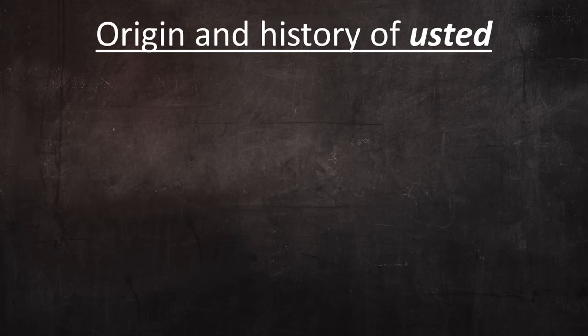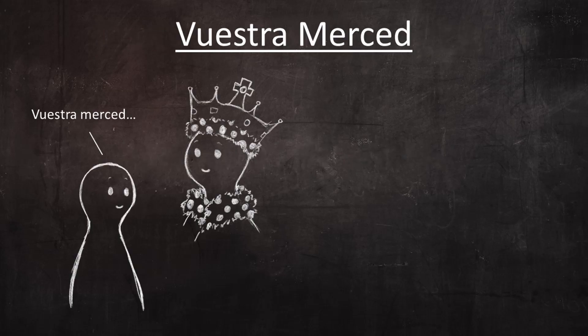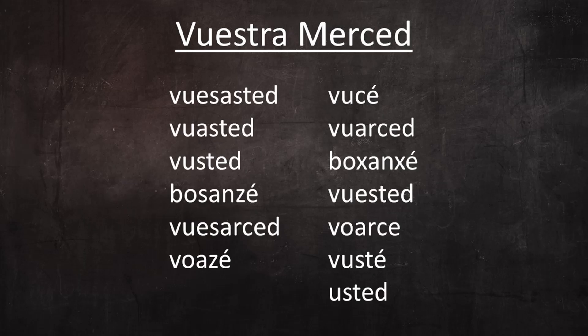I think it's very helpful in understanding Spanish second-person pronouns to know something about their history. In medieval Spanish, the title vuestra merced — the equivalent of the English title 'your grace' — was used to address royalty. Over time, the phrase was used to address more and more people, until eventually it came to be used when speaking to anyone who is higher than you on the social ladder. As is often the case with frequently used expressions, vuestra merced morphed into contracted forms, and there were many of them.